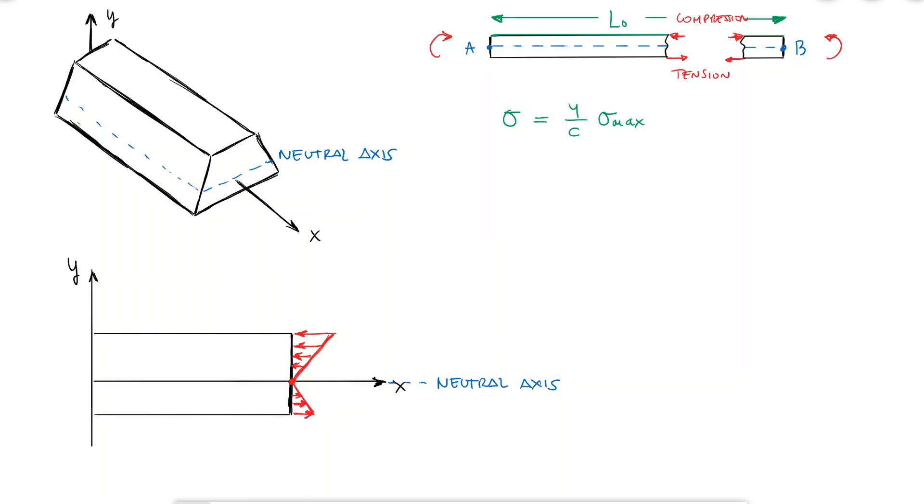If I look at an infinitesimal area that is located at the cut, I would see that that small area is subjected to a force dF. If I multiply that force dF by the distance to the neutral axis y, I would find the moment for that infinitesimal area, and notice that the direction of dF is negative.